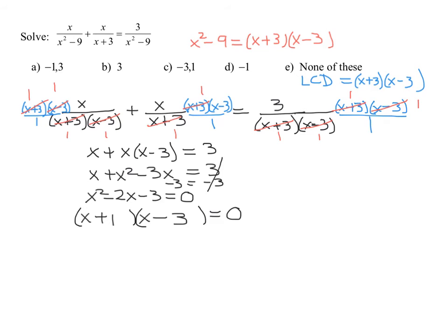Two factors multiplied together equals 0. Set each of them equal to 0. So I get x plus 1 equals 0. Subtract 1 from both sides. I get x equals negative 1. Or I get x minus 3 equals 0. Add 3 to both sides. I get x equals 3.